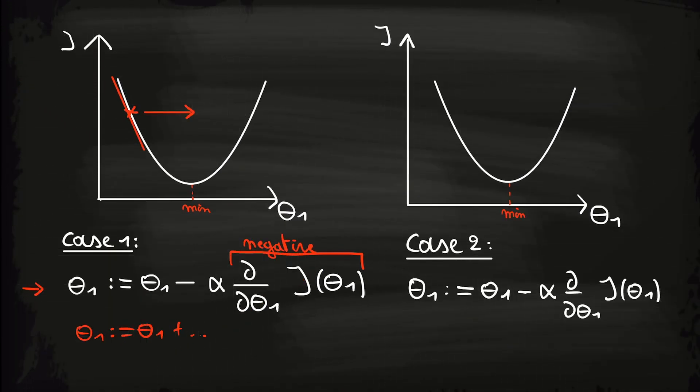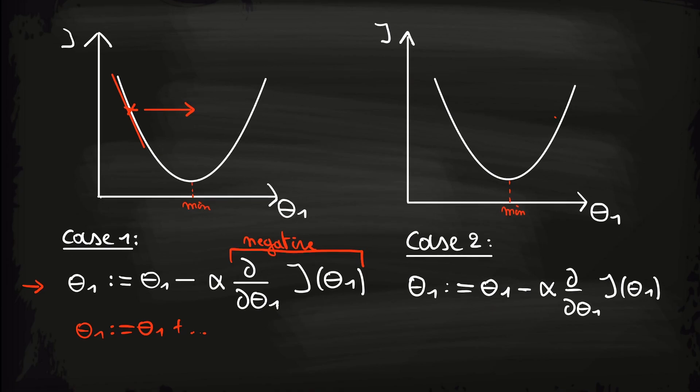We can now also do the same for case 2, where we take an initial value to the right of the minimum. In this case, the slope will be positive and thus the value of theta j will decrease. And again, this is correct because the minimum lays to the left of the initial point.